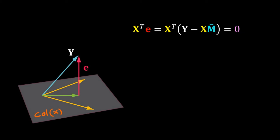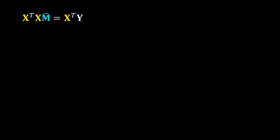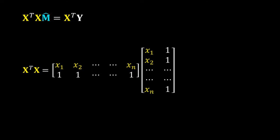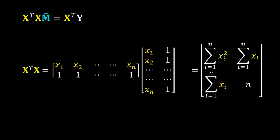Now rearrange the terms. We get X^T X · m̂ = X^T y. We have to get m̂ using this relationship. Calculate X^T X first — swap the columns of X to rows to get the transpose, then multiply with X. We get a 2×2 matrix composed of the sum of squares of xi, the sum of xi, and n.